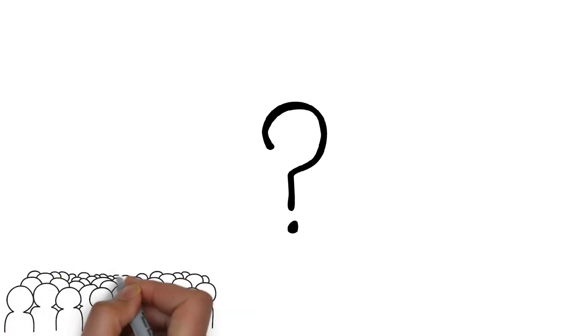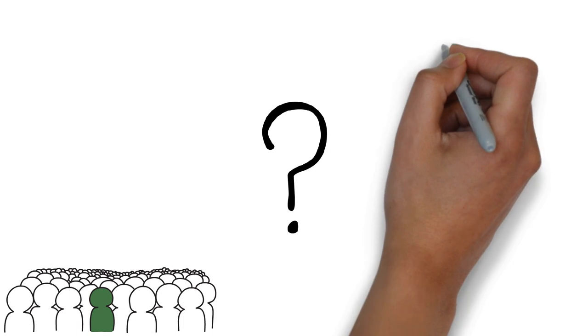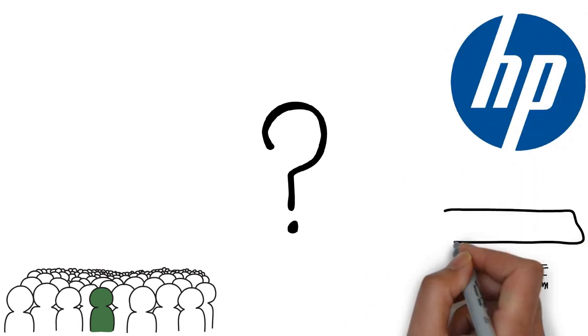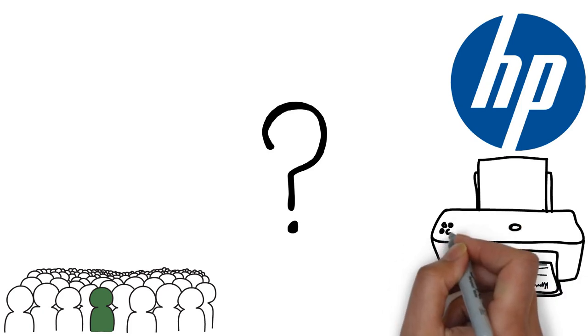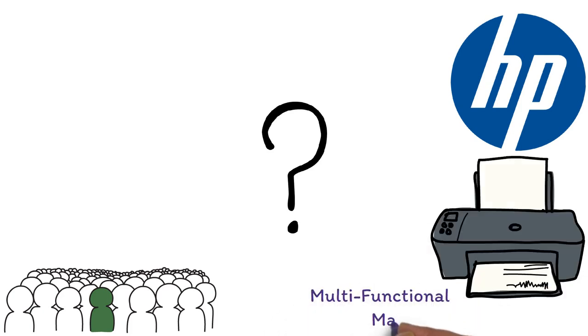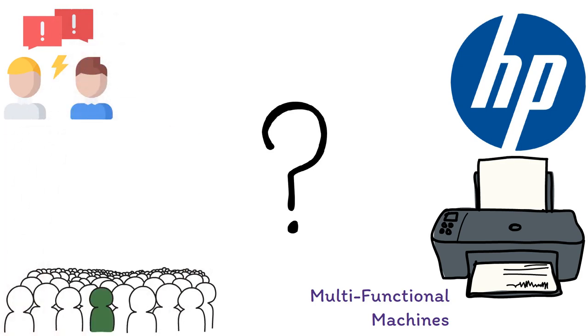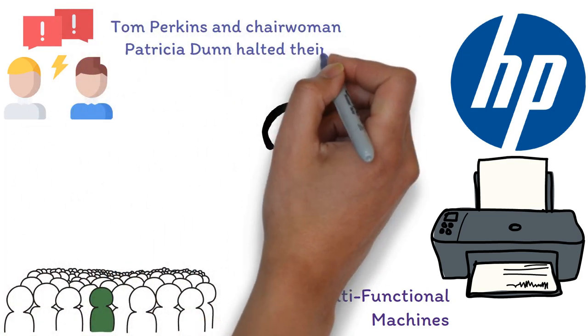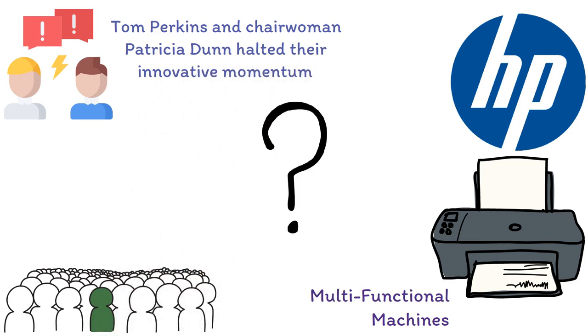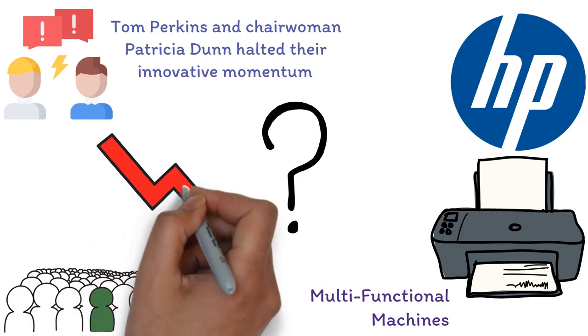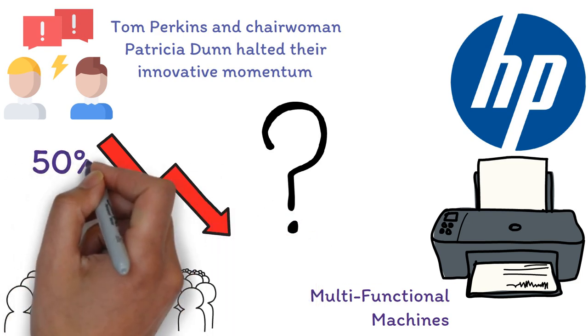The alternative? Becoming a mere contributor to horizontal progress in an already crowded arena. Consider Hewlett-Packard in the 1990s, continuously rolling out inventive products like affordable color printers and multifunctional machines. However, internal conflicts in the late 90s between tech forward Tom Perkins and chairwoman Patricia Dunn halted their innovative momentum. Choosing to sideline technology and innovation in the 2000s, HP saw a 50% dip in its market value.